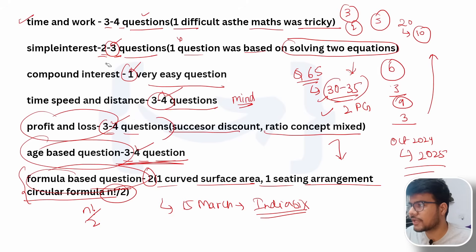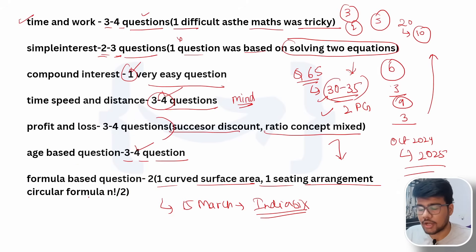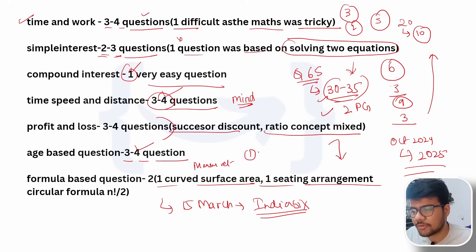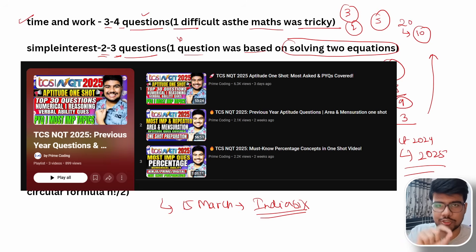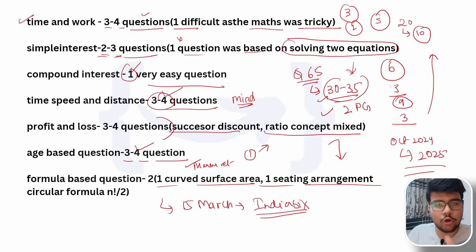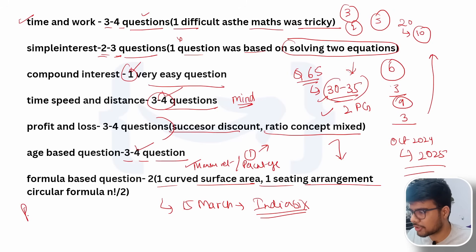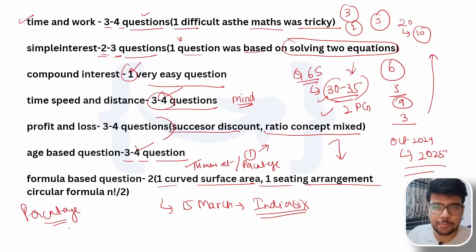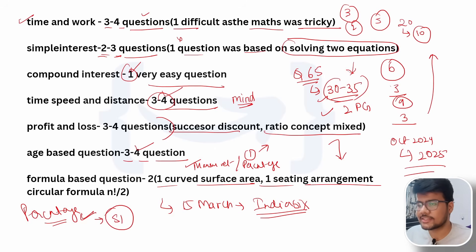The key topics for numerical ability are: time and work, simple interest, compound interest, time and speed/distance, profit and loss, age-based questions, and formula-based questions including mensuration. I've already uploaded one-shot aptitude videos covering mensuration, time and speed, and profit and loss — available in the playlist. Percentage is also an important topic; it was repeated a lot in shift one candidate feedback, though it may have been missed in this shift's report.